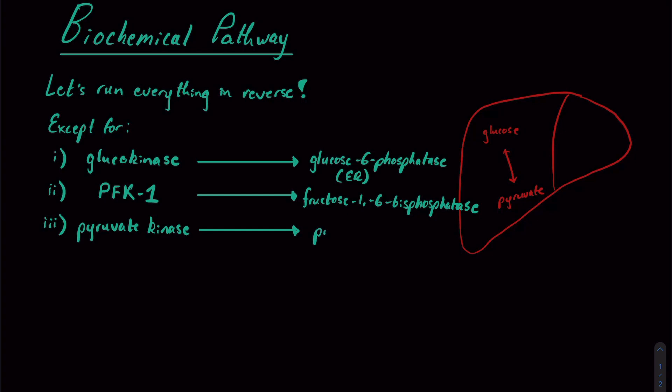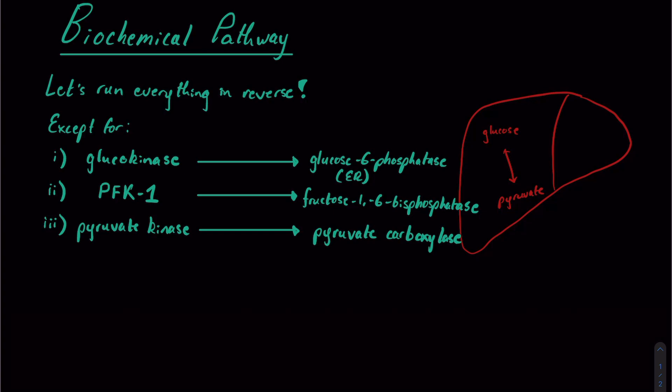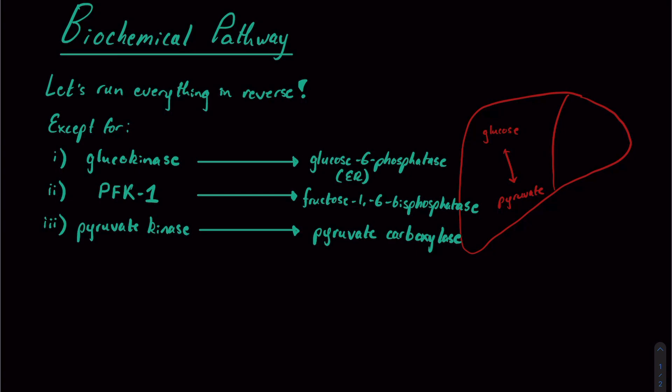where we find pyruvate carboxylase that will actually carboxylate pyruvate into oxaloacetate. That oxaloacetate will be converted to another molecule exported back out to the cytoplasm, where phosphoenolpyruvate carboxykinase will help us go all the way back upstream from pyruvate all the way back to phosphoenolpyruvate.